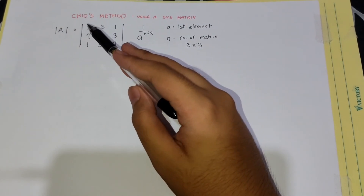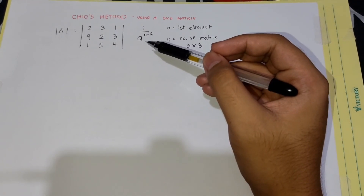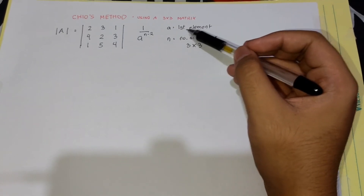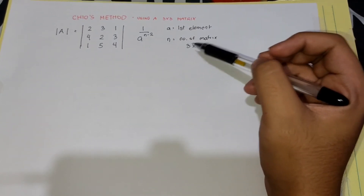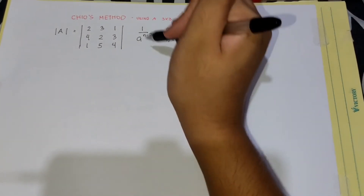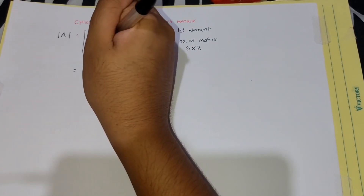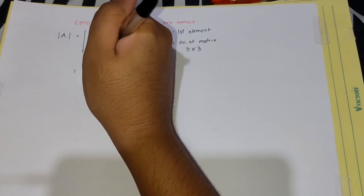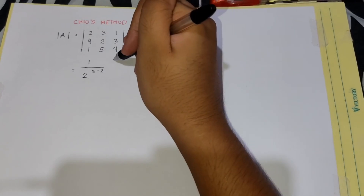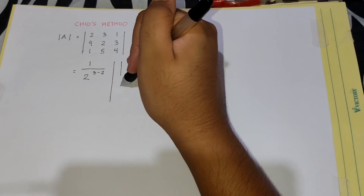Now we will apply Chiyo's method to find the determinant of a 3 by 3 matrix. The formula for Chiyo's method is 1 over A raised to n minus 2, where A equals the first element of the matrix and n equals the order, which is 3. We substitute: 1 over 2 raised to 3 minus 2 equals 1 over 2. Next, simplify the 3 by 3 matrix by making four 2 by 2 matrices.